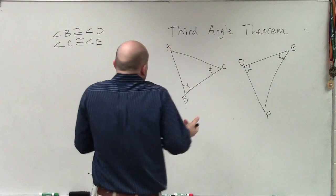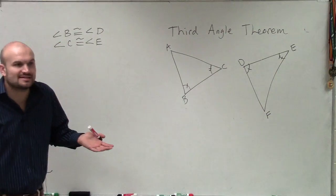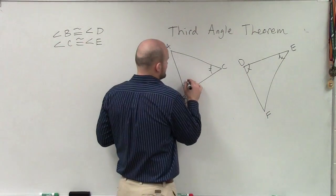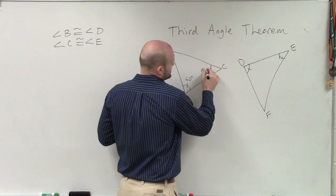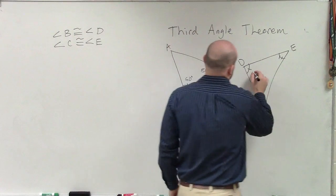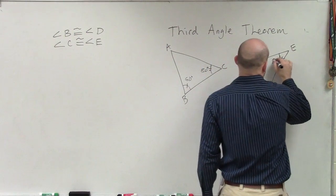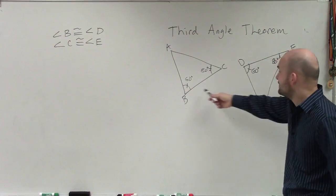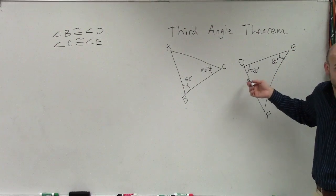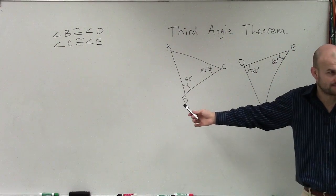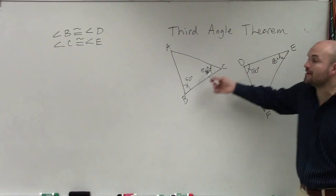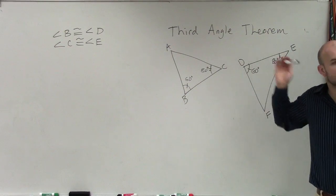Let's use some numbers to see if it makes sense. Let's call this 60 degrees and that 80 degrees. So if that's 60 degrees, that one has to be 60 degrees because they're congruent in measure. That one's 80 degrees, then that one has to be 80 degrees because those are congruent angles.